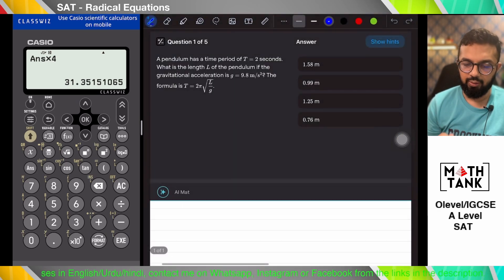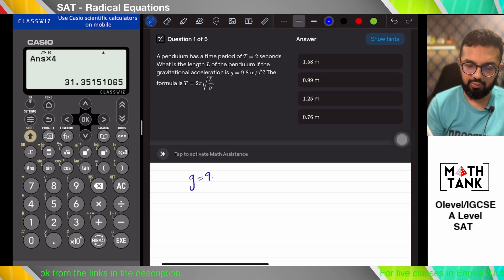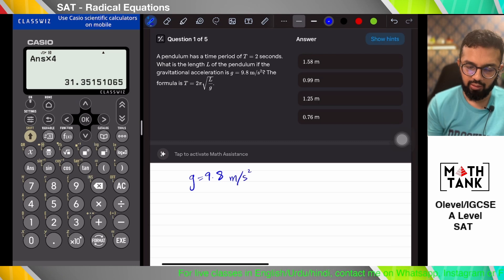Since it was asking me the value of 4x. I think there'll be more easy questions. Let's do these. A pendulum has a speed of t equals to 2. What is the length l of the pendulum if the gravitational acceleration is this?